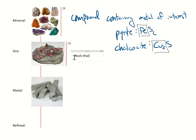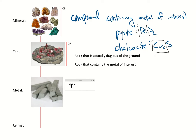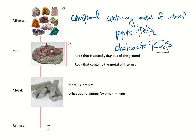Ore is the rock that is actually dug out of the ground — that is to say, the rock that contains the metal of interest. A mining company would actually dig the ore out of the ground and then physically separate the minerals from the ore. The metal is the metal of interest; this is what you're aiming for when mining.